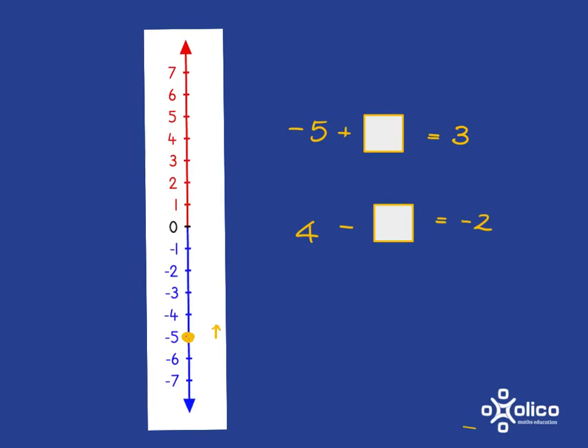and we know that where we want to end up is we want to end up there at 3. So, how many steps do we need to go to get from negative 5 all the way to 3? Well, to get from negative 5 to 0 is 5 steps, and then to get to 3 is another 3 steps. So, in total, we have gone 8 steps to get from negative 5 to 3.